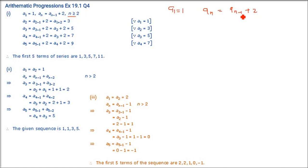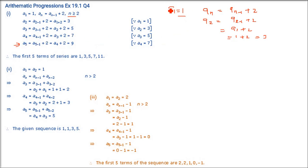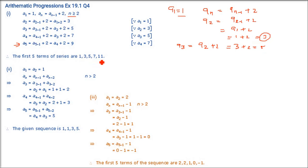For n=1, a₁ = 1. Then a₂ = a₁ + 2 = 1 + 2 = 3. We cannot jump to a₅ without finding a₃ and a₄ first. a₃ = a₂ + 2 = 5. Continuing, a₄ = 7, and a₅ = 9. So the sequence is 1, 3, 5, 7, 9.